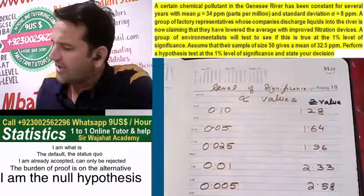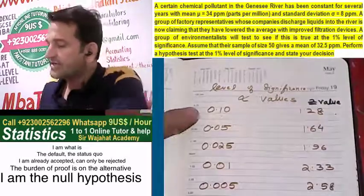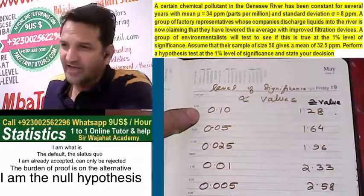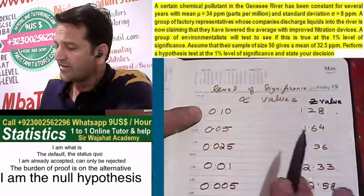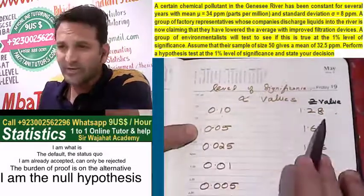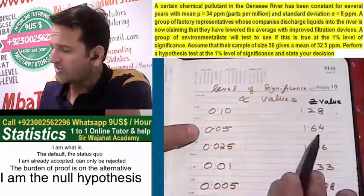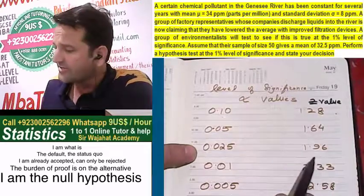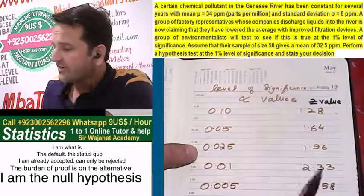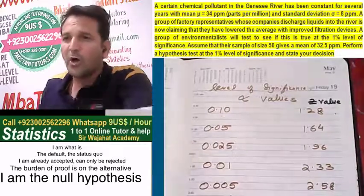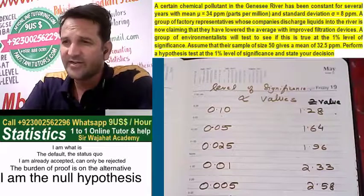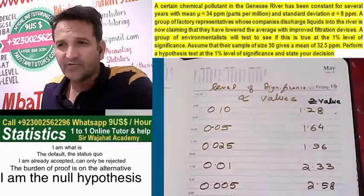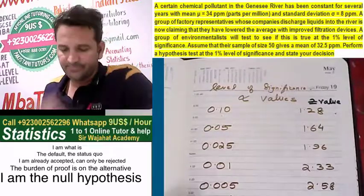I have already written out the level of significance alpha values: 0.10 is 1.28, 0.05 is 1.64, 0.025 and so on. Whatever level of significance is required, we will take it from the table.